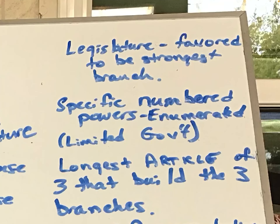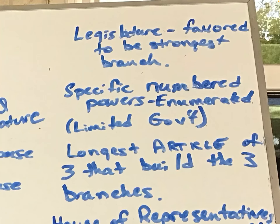In the Constitution, the legislature was favored to be the strongest branch. The House is based on population, while in the Senate each state gets two senators, so that each state gets equal representation.